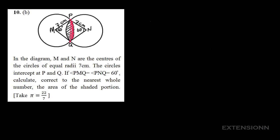We'll calculate the area of half of the shaded portion. Then, once we have the area of that half, we'll multiply by two to get the total area of the shaded portion.